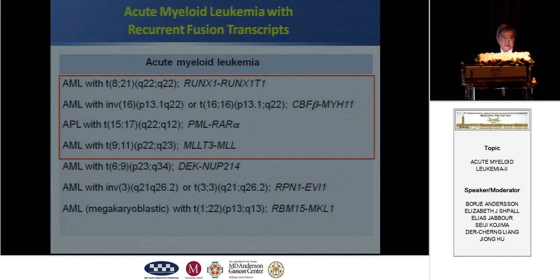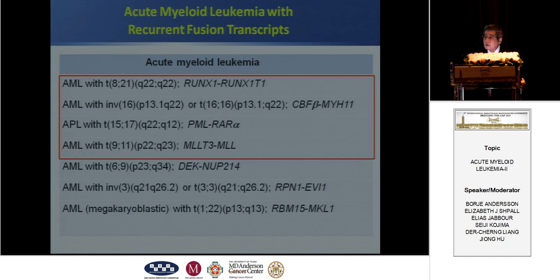AML has recurrent fusion transcripts, including t(8;21) translocation, t(15;17), inv(16), and t(9;11). These are commonly seen and can be used as useful targets in a minimal residual disease assay. Others include t(6;9), inv(3), and acute myeloid leukemia with t(1;22) translocation.